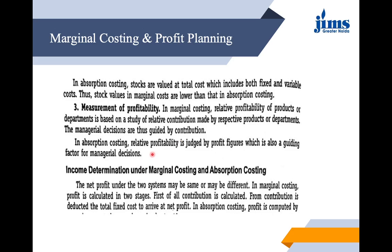Next, we study income determination under marginal costing and absorption costing. The net profit under the two systems may be the same or may differ. In marginal costing, profit is calculated in two stages: first, contribution is calculated, and then total fixed costs are deducted from contribution to arrive at net profit.